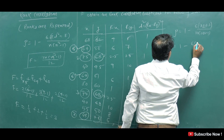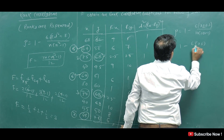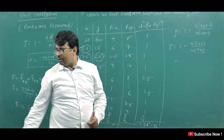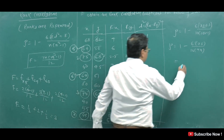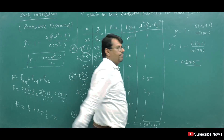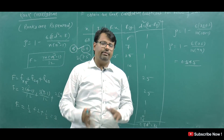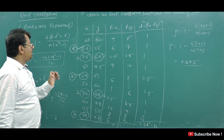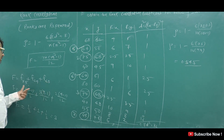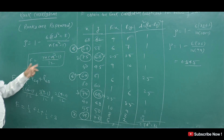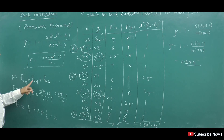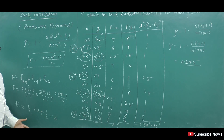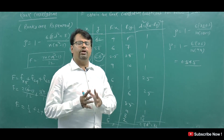So rho is equal to 1 minus 6 into 75 — that is summation d-squared plus F — divided by 10 into 99. After simplifying, the answer comes out to 0.545. So the rank correlation coefficient value is 0.545. Remember to assign repeated values their average rank, then compute the F correction for each repeated value and add it to the summation.